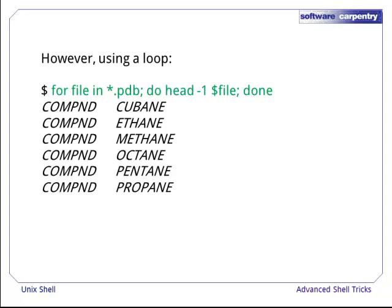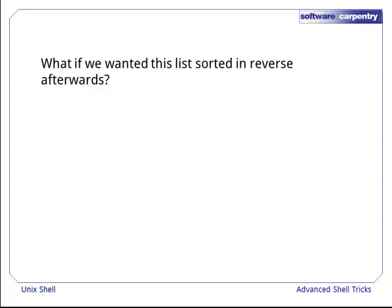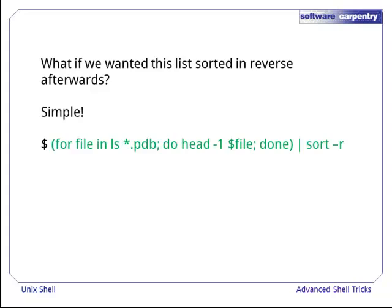So how does this fit in with what we have learned already with pipes and filters? We can take this further. What if we wanted this list sorted in reverse afterwards? We simply pipe the output from our loop to a command. Although not necessary, we can surround the loop part with parenthesis for clarity, so we can clearly see where the pipe is applied.